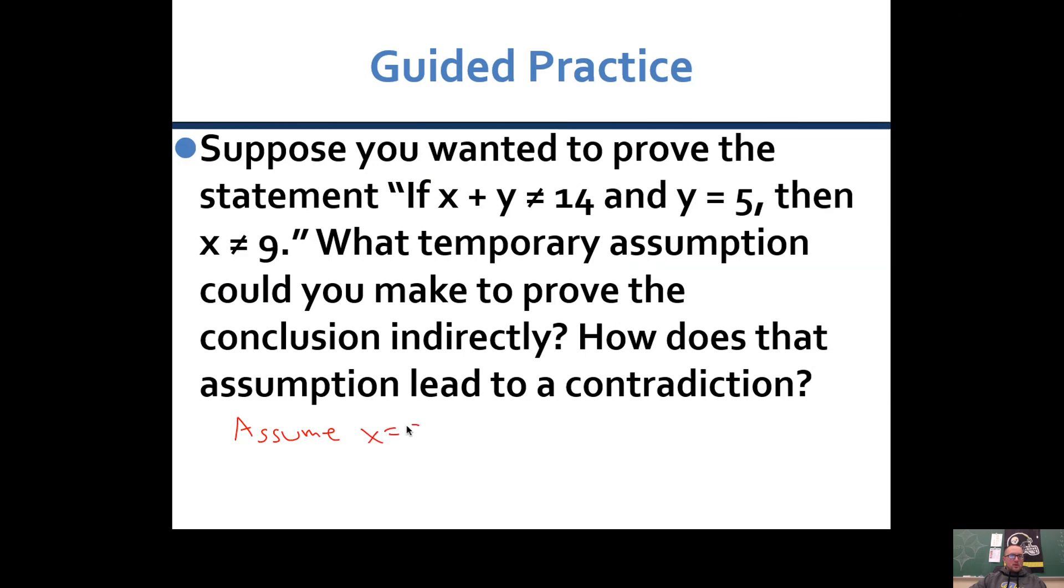And then we're going to reason logically, hopefully we get some type of contradiction, which then means that assuming this was wrong, which means that this is true. So if we're assuming that x equals 9, we know that y equals 5. So 9 plus 5 equals 14. But it says here that it doesn't equal 14. That's a false statement.